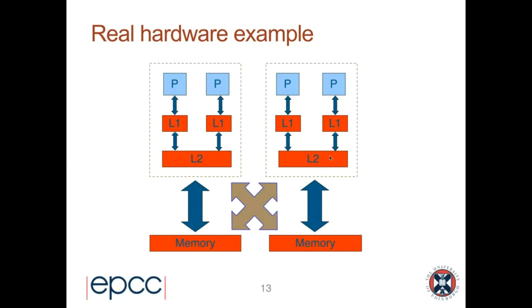To illustrate the complexity — though this is still very simplified — instead of one memory, the memory is actually split into two parts, each associated with a socket containing a chip. Each chip may contain multiple cores, and each core might have its own level-one cache, while multiple cores might share a level-two cache. On many modern systems there are three levels of cache. Nevertheless, the simple model is still supported: every processor can read and write all locations in main memory.